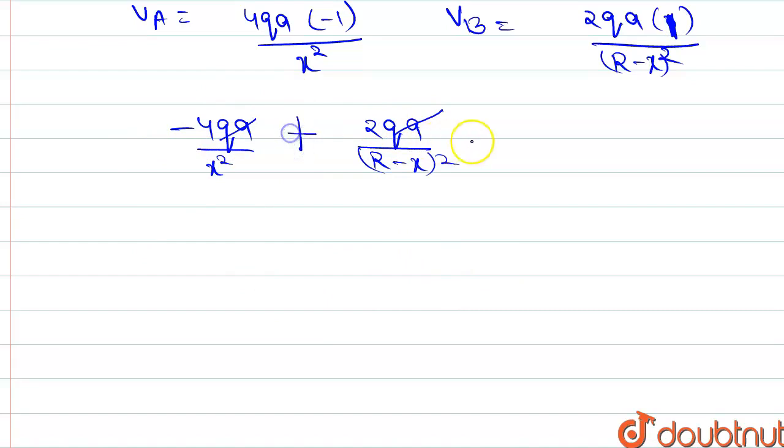qa and qa cancel out, and it equals zero. Then 2 over x squared equals 1 over (r minus x) squared. Then (r minus x) squared times 2 equals x squared.